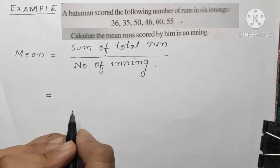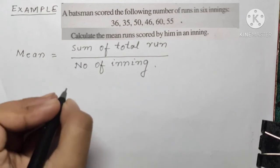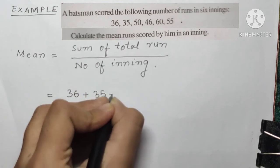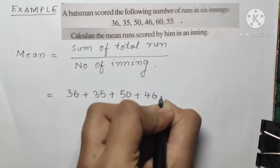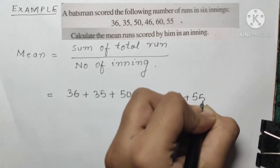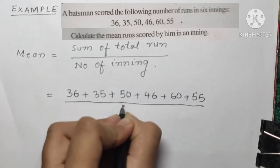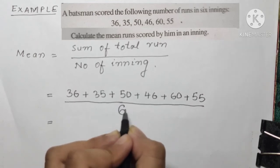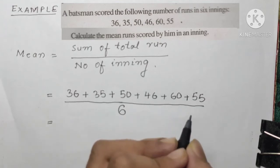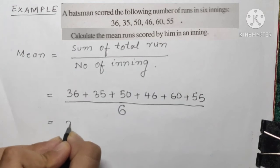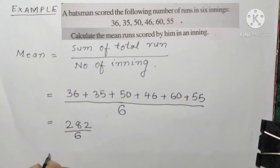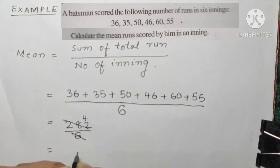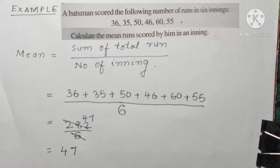Sum of total runs equals 36 + 35 + 50 + 46 + 60 + 55, and the number of innings is 6. Adding: 36 + 35 = 71; 71 + 50 = 121; 121 + 46 = 167; 167 + 60 = 227; 227 + 55 = 282. So mean equals 282 divided by 6, which equals 47. The mean runs scored per inning was 47.